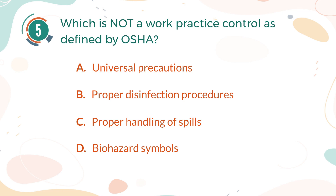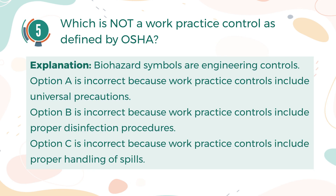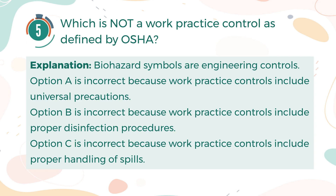The correct answer is D, Biohazard symbols. Explanation: Biohazard symbols are engineering controls. Option A is incorrect because work practice controls include universal precautions. Option B is incorrect because work practice controls include proper disinfection procedures. Option C is incorrect because work practice controls include proper handling of spills.